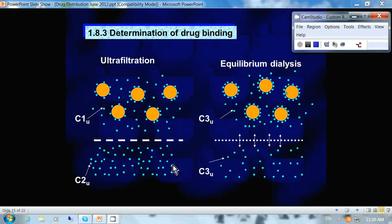So the amount of unbound drug here, C2, is actually an overestimate of the actual amount of unbound drug in the blood.